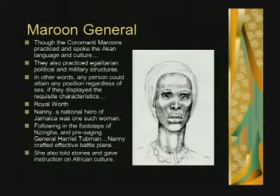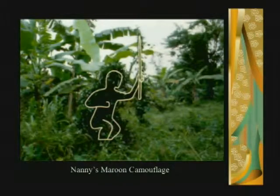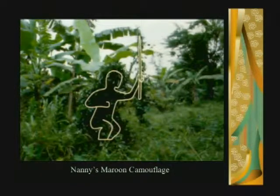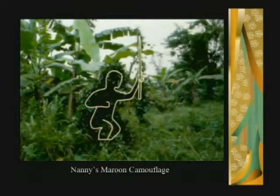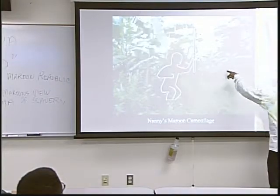Nanny also told stories and gave instructions in African culture. Since the British were not educating slaves, in order to get an education you'd have to leave slavery. This is an animated GIF from a Jamaican website — when you put your cursor over what looks like a banana tree and a bush next to it, there's a guy crouched there with a spear. And there's another one right there, and another one right there.